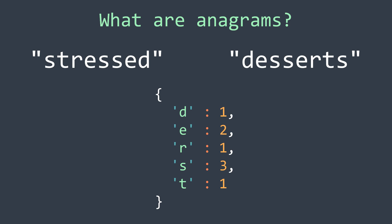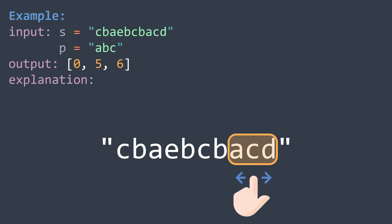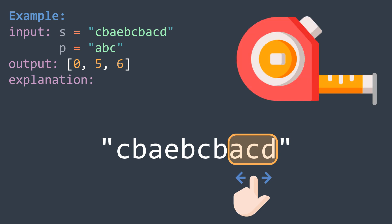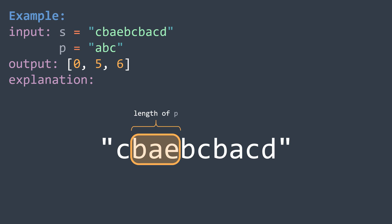Now that we know what anagrams are, we can start solving our problem. Here is an input/output example — we can find anagrams of p at indexes 0, 5, and 6. To find them, we will use the sliding window technique. An important detail is that anagrams must have the same length, so our window will always have the same size. We check each substring of p's length starting at index 0, then index 1, and so on.